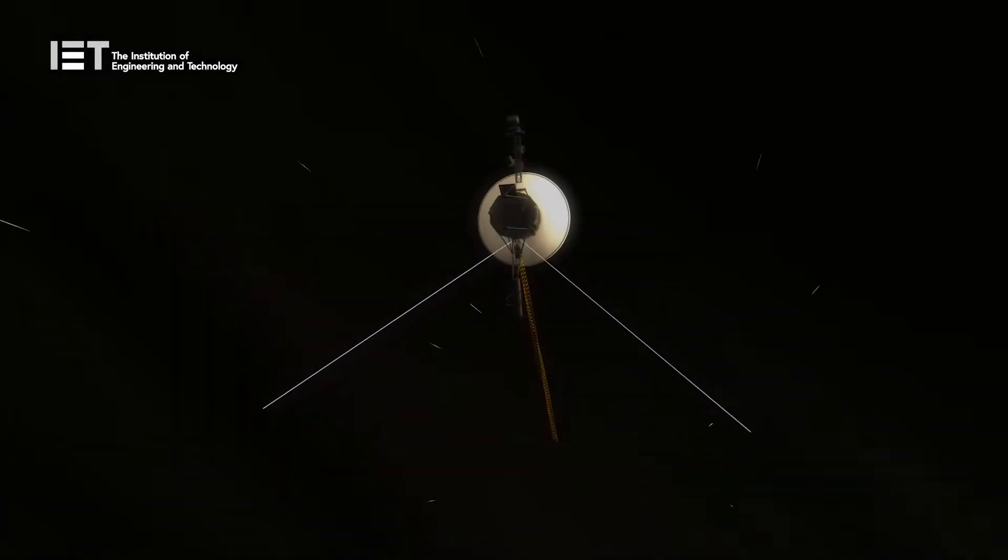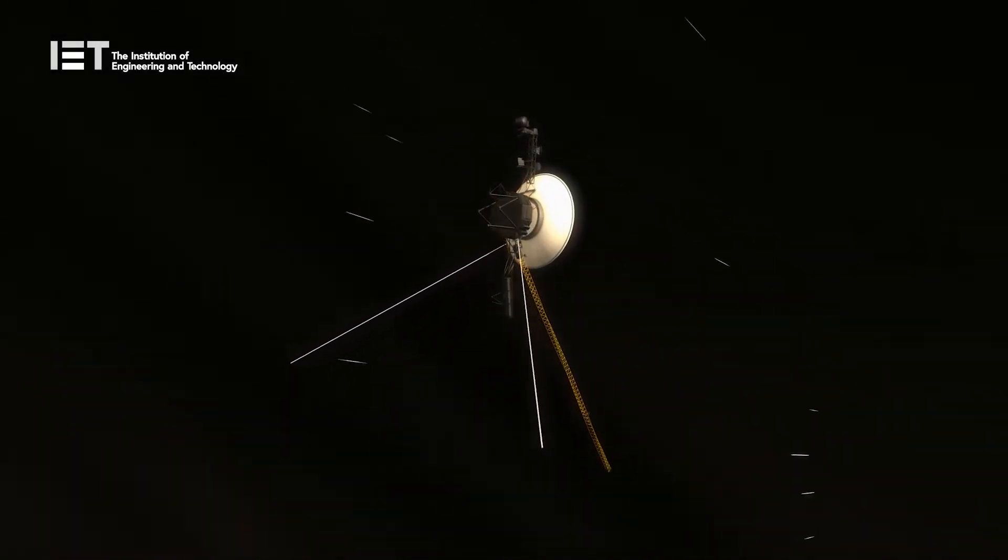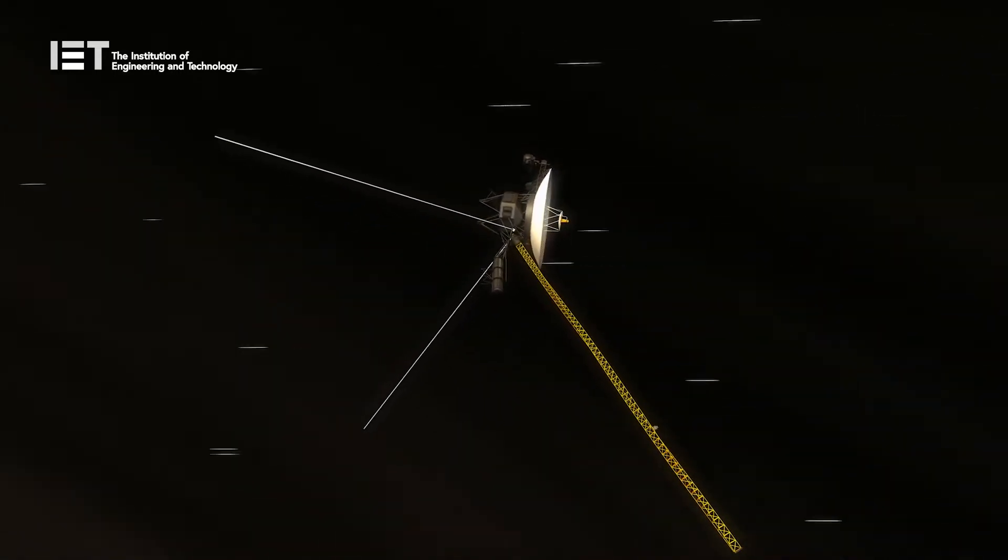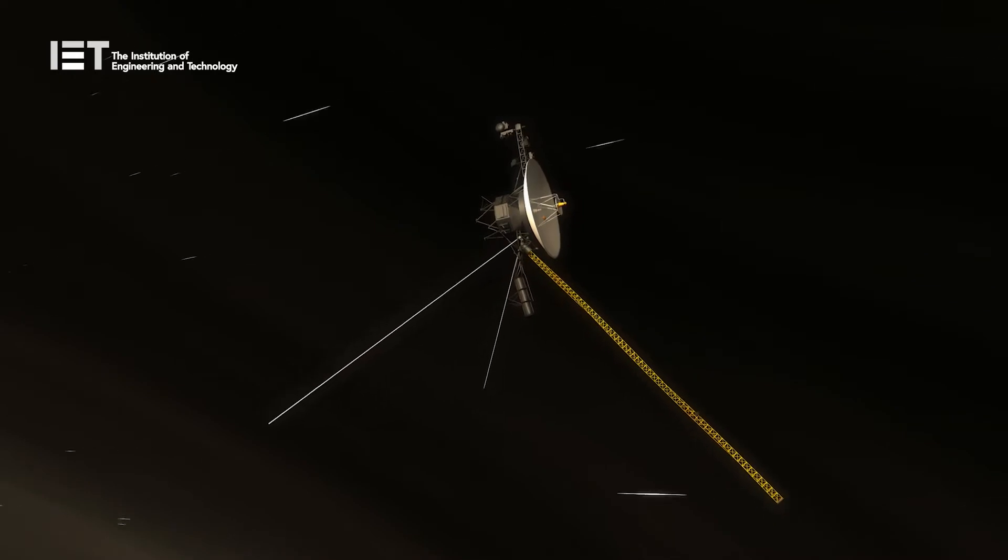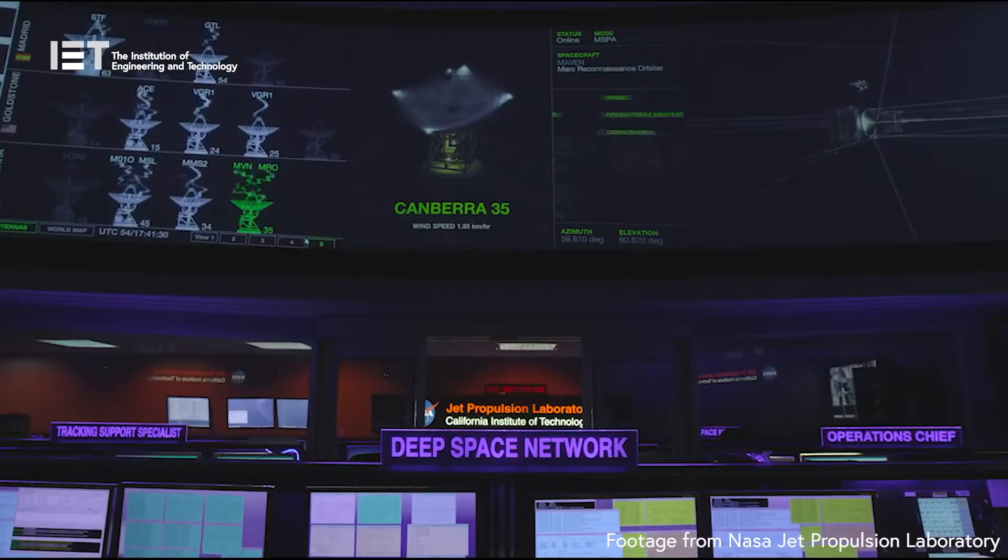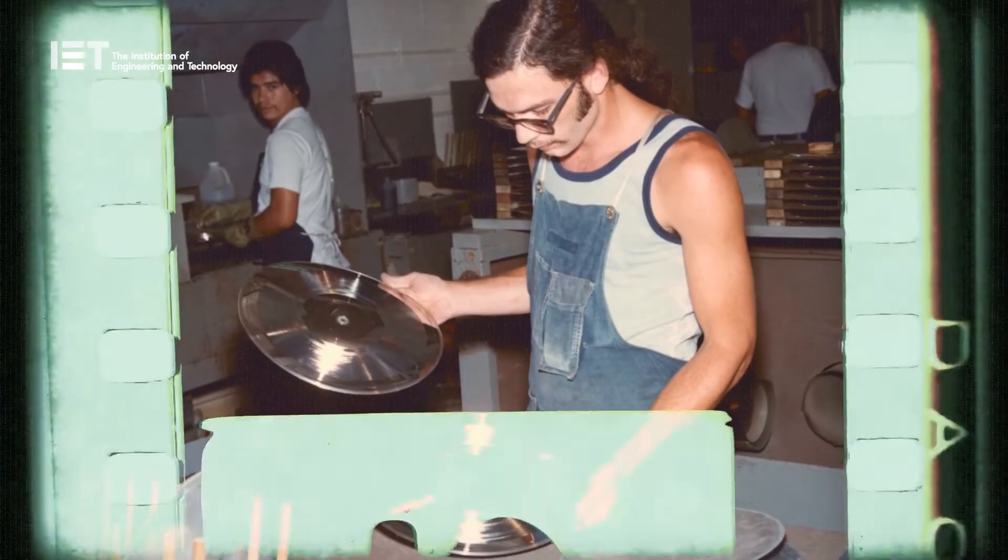The two Voyager probes are currently traveling through interstellar space and are the furthest man-made objects from the Earth. Before their launch in 1977, a NASA committee chaired by famed American astronomer Carl Sagan selected a series of images and sounds to go into the golden records.